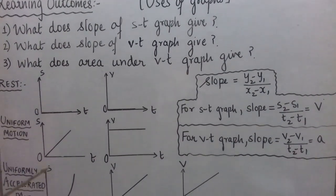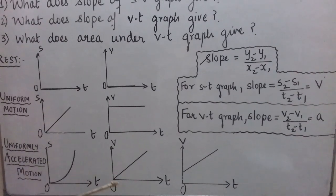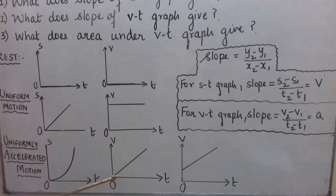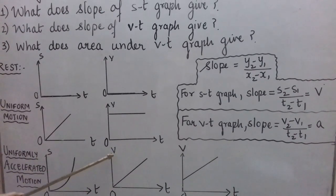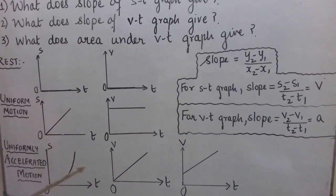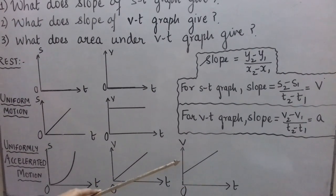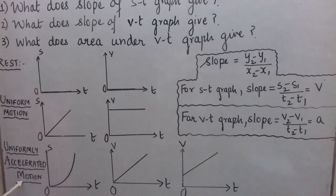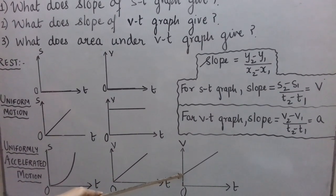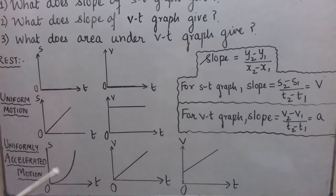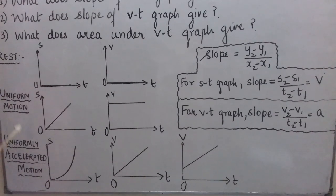When the ST graph is a parabola, it is for uniformly accelerated motion. The corresponding VT graph is a straight line inclined to the time axis, meaning equal changes in velocity take place in equal intervals of time — the definition of uniformly accelerated motion. There is also a VT graph where the body is already having a certain velocity when time starts, meaning it was already in motion, but it is still uniformly accelerated.